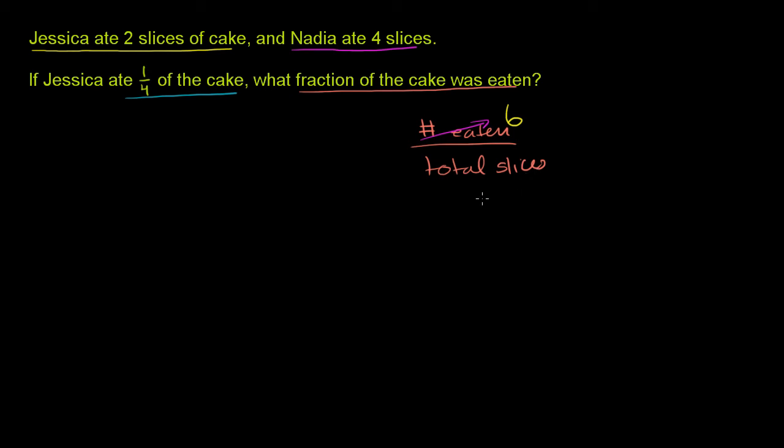Six slices eaten, and now we have to figure out the total slices. Well, they tell us that Jessica ate two slices of the cake, and those two slices are 1 fourth of the cake.